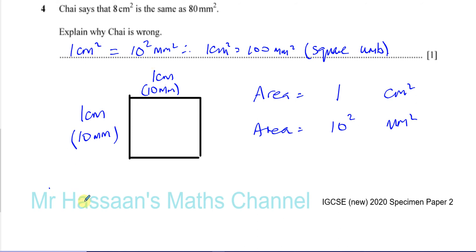So if 1 cm is equal to 10 mm, then 1 cm squared is equal to 10 mm squared.